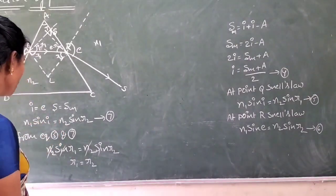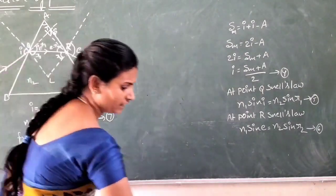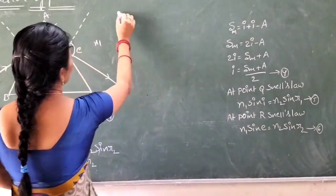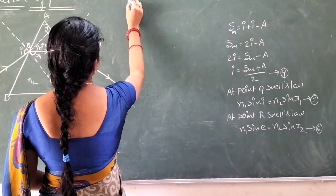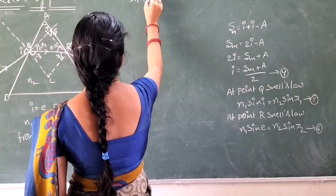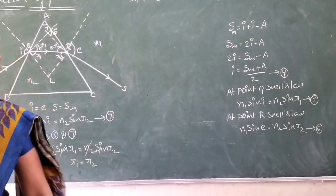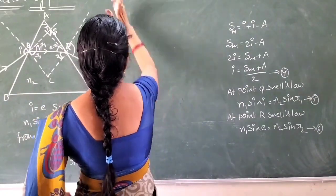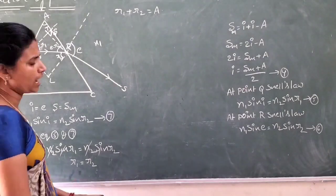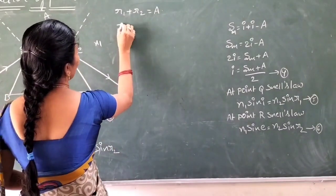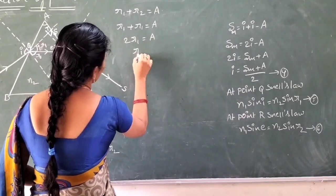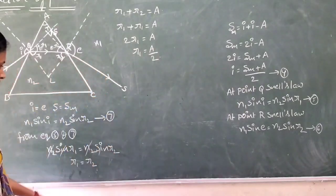Substituting R₁ = R₂ into equation 3 (R₁ + R₂ = A): 2R₁ = A, so R₁ = A/2. From Snell's Law at point Q: N₂/N₁ = sin I / sin R₁. Substituting I = (A + δₘ)/2 from equation 4 and R₁ = A/2: N₂/N₁ = sin((A + δₘ)/2) / sin(A/2).